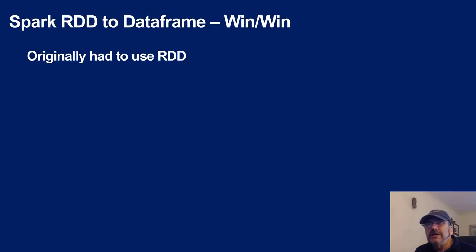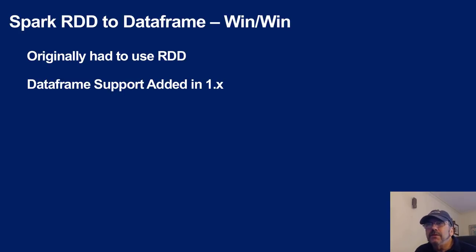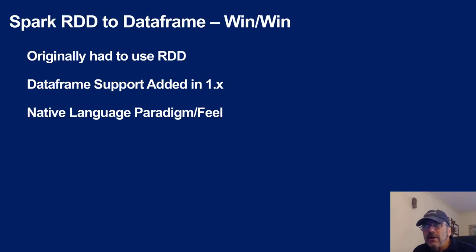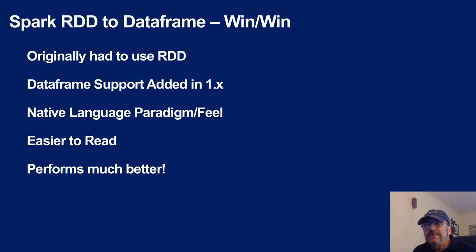RDDs were still very powerful and easier than MapReduce in Hadoop, but a little awkward to work with. DataFrame support was added around Spark 1.4–1.6, and version 2.0 and above is very heavily DataFrame-oriented. If you don't have legacy code to worry about, just go with DataFrames. They perform better and are easier to read.